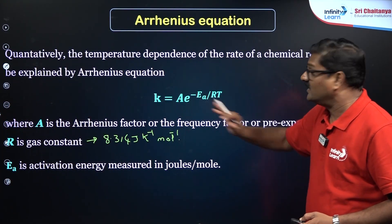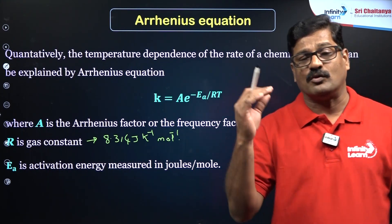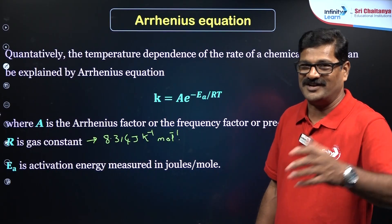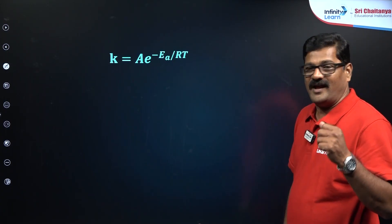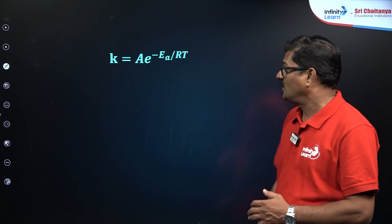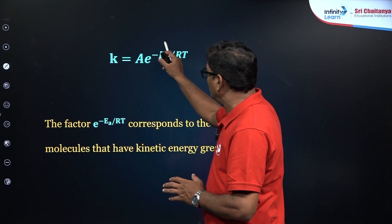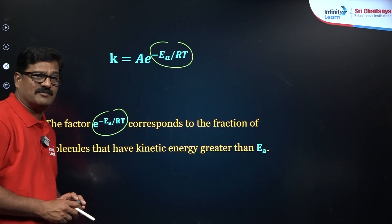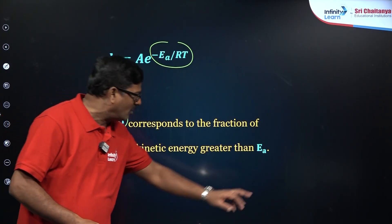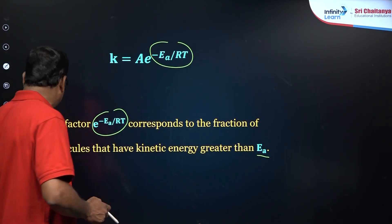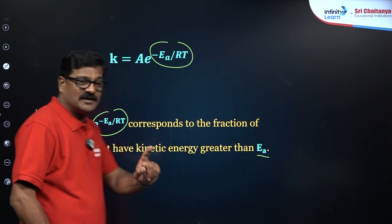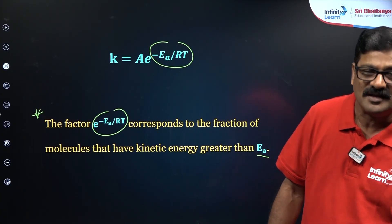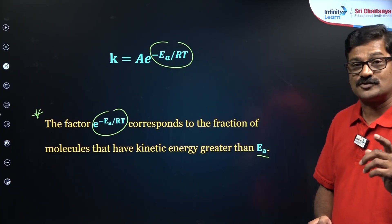Let us apply this Arrhenius equation and see how questions appear in the NEET examination based on NCERT. The factor e^(−Ea/RT) in the equation corresponds to the fraction of molecules that have kinetic energy equal to or greater than the activation energy. This is a very important conceptual point on which logic-oriented NEET questions are based.